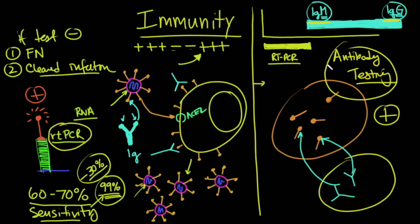Antibody testing checks whether or not you have immunity against the virus, whereas reverse transcriptase PCR looks to see whether you actually have viral particles still inside your body. So the question is: is a patient testing falsely negative due to poor sensitivity on the RT-PCR, or is the patient truly becoming reinfected again?